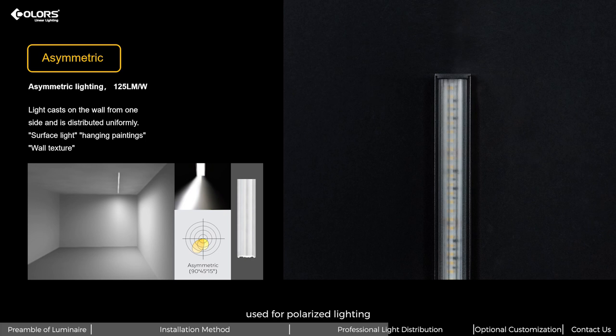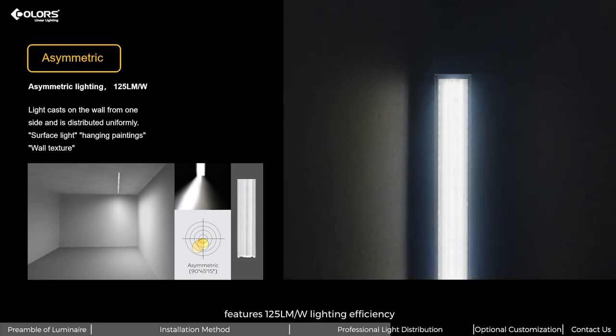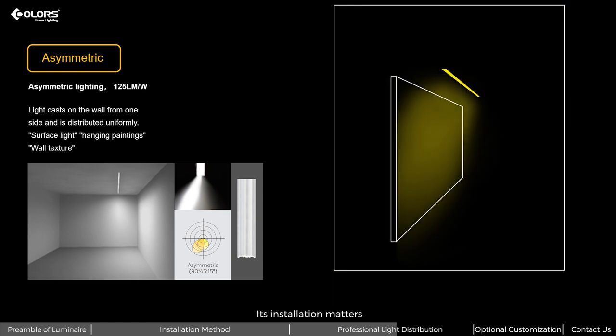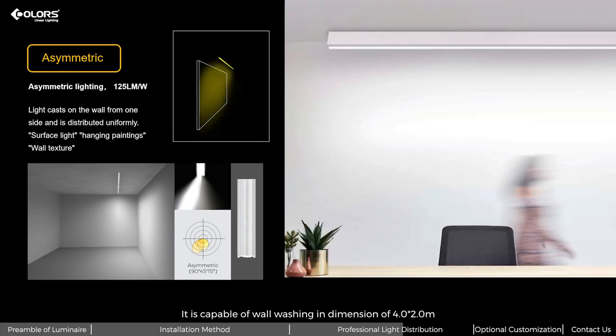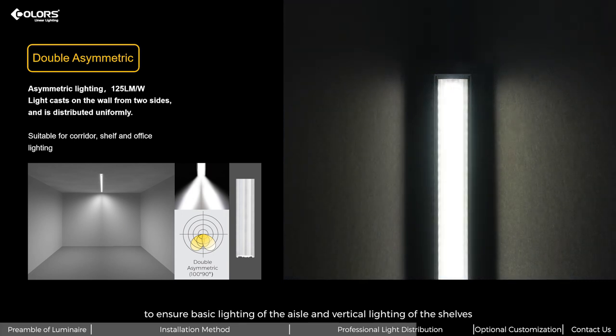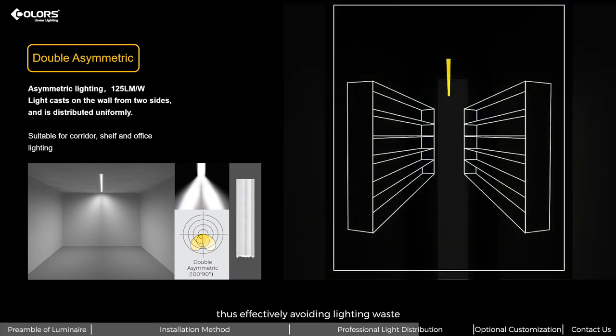Asymmetric type used for polarized lighting features 125 lumens per watt lighting efficiency, single-sided light emitting and uniform lighting. Its installation method requires 3 meter mounting height and 0.8 meter distance from wall. It is capable of wall-washing in dimension of 4 x 2 meters at an average illuminance of 300 lumens in interval mode. Double asymmetric type can be used in between two rows of shelves to ensure basic lighting of the aisle and vertical lighting of the shelves, thus effectively avoiding lighting waste. It's suitable for shelf corridor and office lighting.